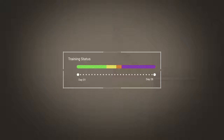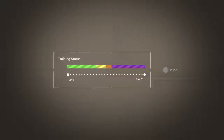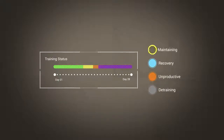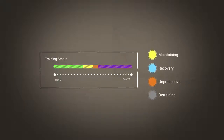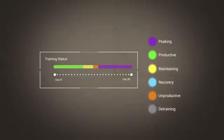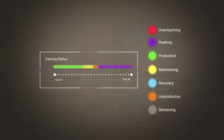There are seven training status levels in addition to no status. These are: detraining, unproductive, recovery, maintaining, productive, peaking, and overreaching.